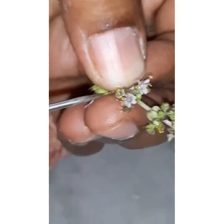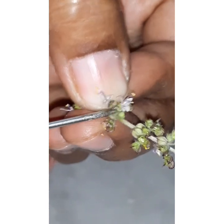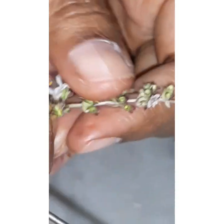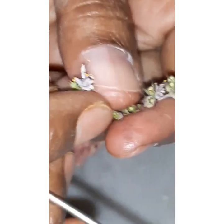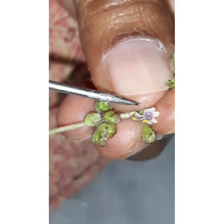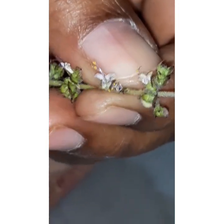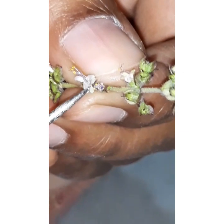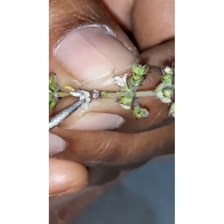INFLORESCENCE of the TULASI, OCIMUM SANCTUM. In this TULASI FLOWER, I will show in this demonstration, BILABIATE COROLLA and also DIDYNAMOUS STAMENS. See this flower. This is flower. Students, look this.